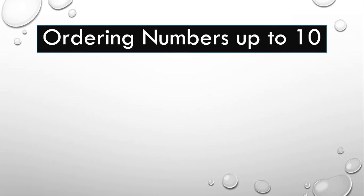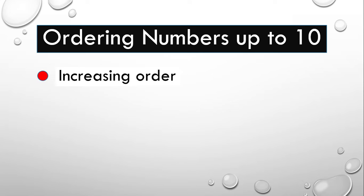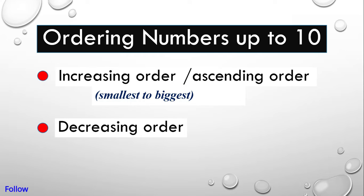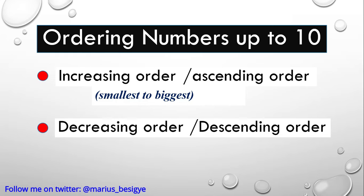In this video we will learn about ordering numbers up to 10. Numbers can be arranged in increasing order, and this order can also be called ascending order. This is the order from the smallest to the biggest. We can also order numbers in decreasing order, which is the same as